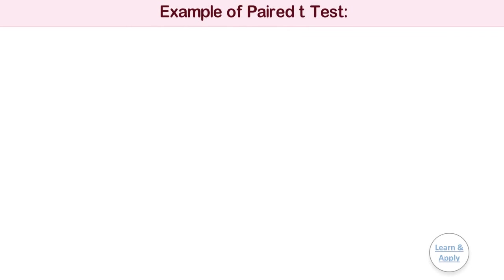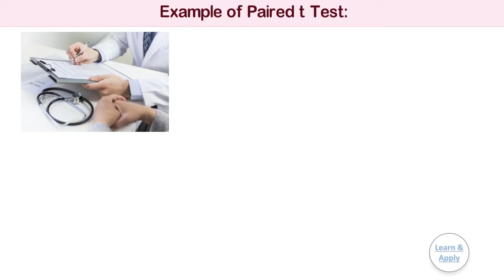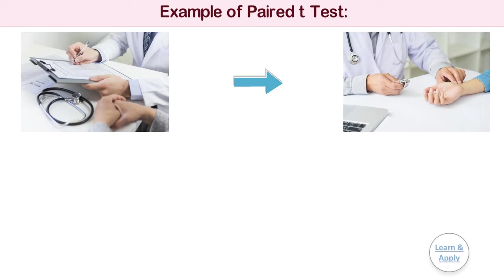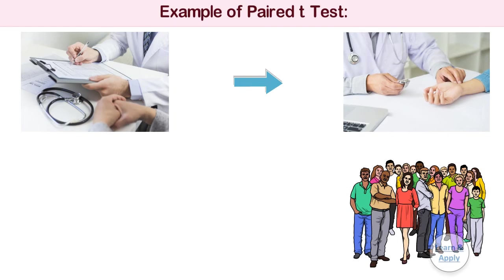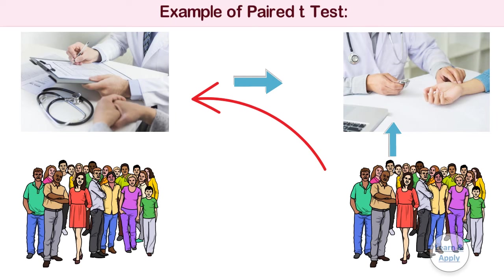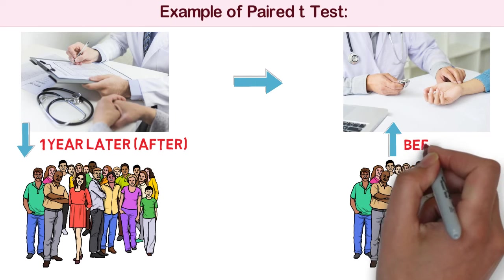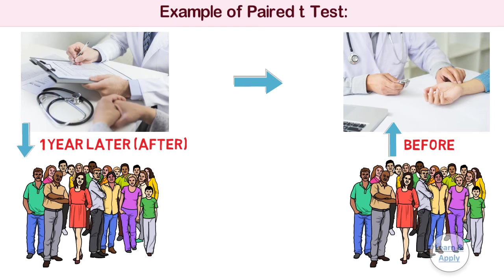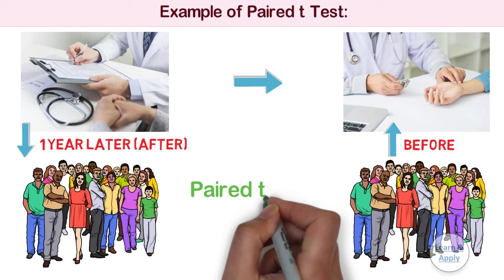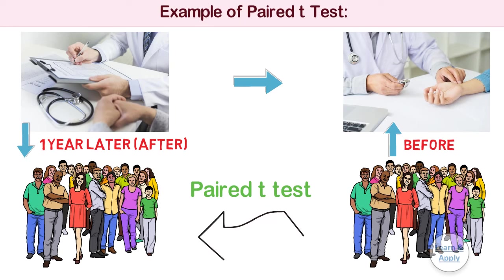Example of Paired T-Test: A physiologist wants to determine whether a particular running program has an effect on resting heart rate. For this purpose, the heart rates of 20 randomly selected people were measured. The people were then put on the running program and measured again one year later. Thus, the before and after measurements for each person are a pair of observations. The physiologist then performs a paired t-test to determine whether the heart rates are different before and after the running program. Now let's see the detailed procedure to conduct a paired t-test in Minitab and Microsoft Excel.